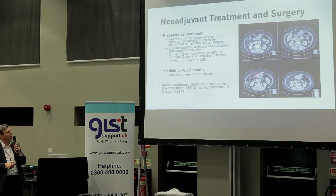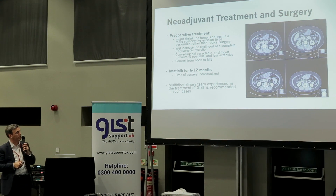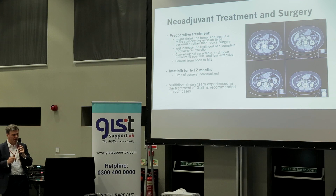When we see a tumour at presentation that's bigger than five centimetres and looks like it might be stuck onto organs, I'll ask for imatinib first. You generally give imatinib for about six to twelve months; the timing of surgery is individualised. What you want is to get the tumour to shrink back as much as possible if it's an advanced one, and that's why multidisciplinary team experience is so important.